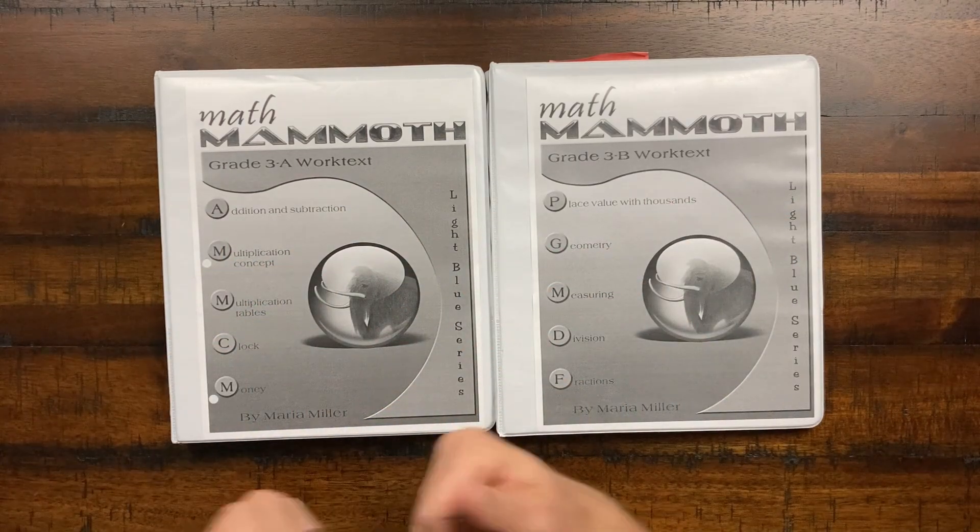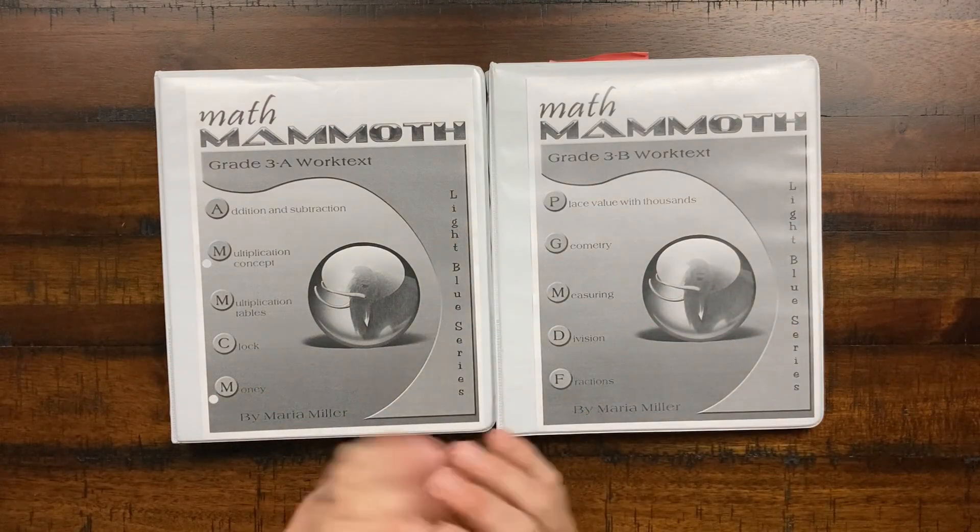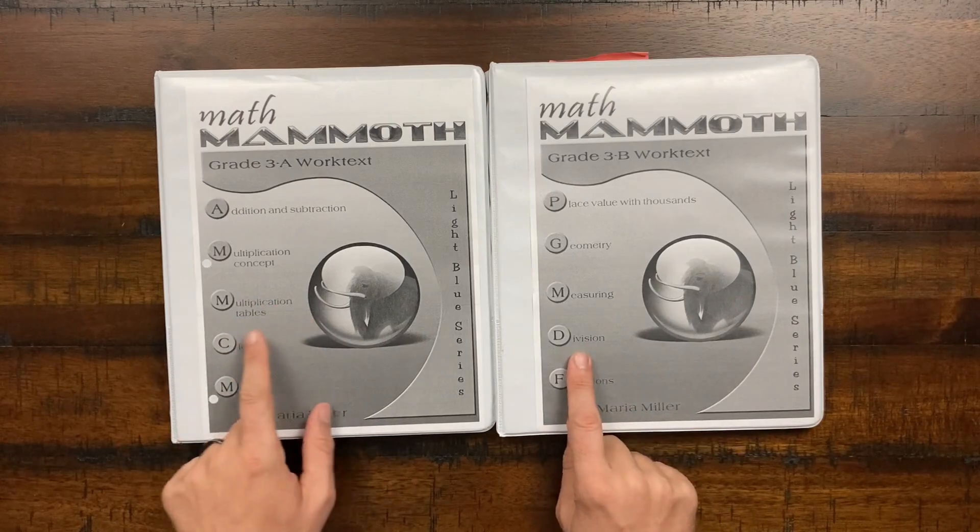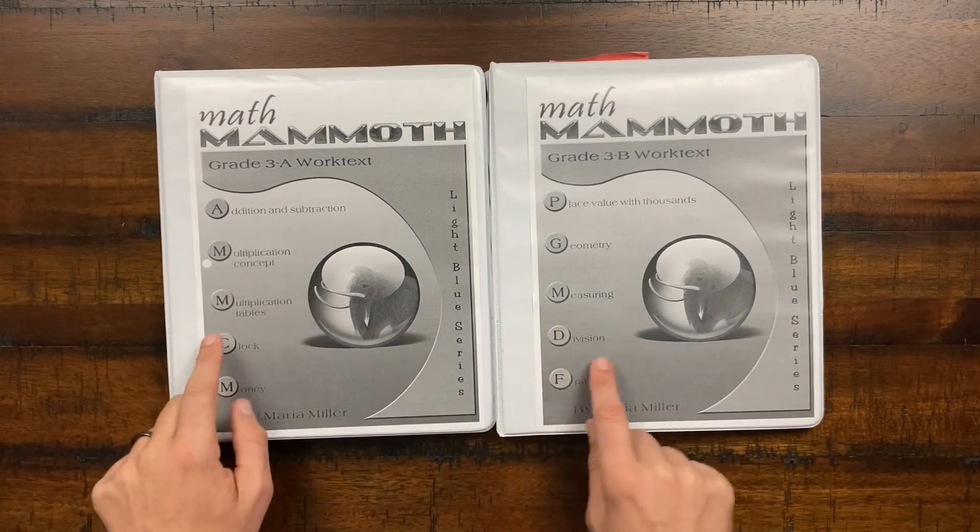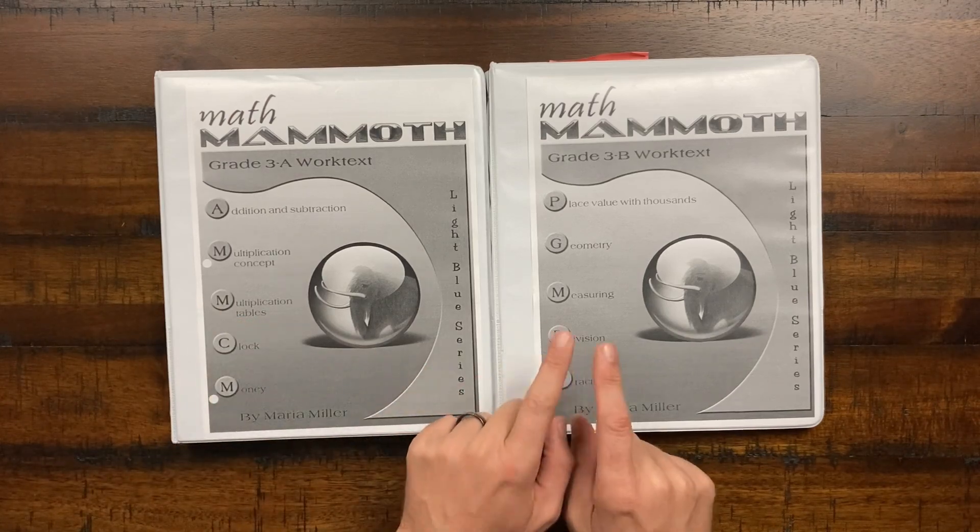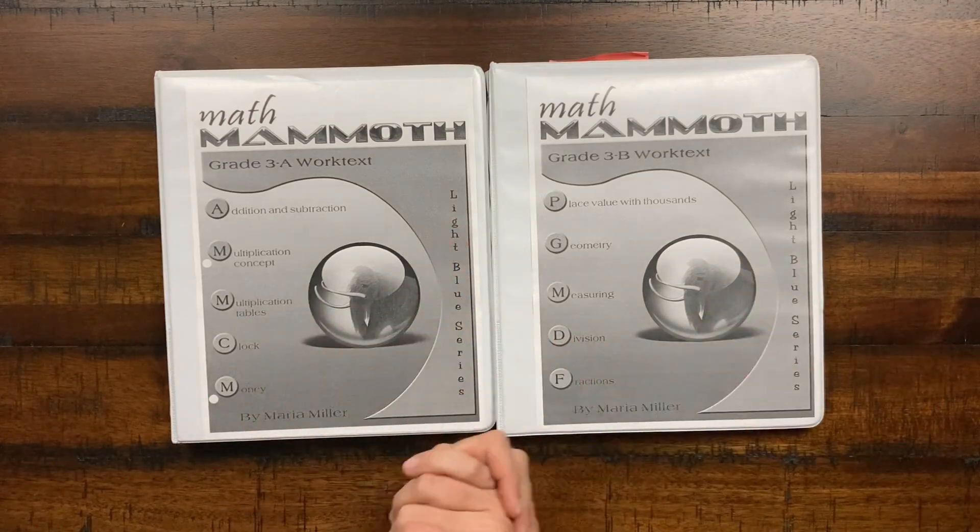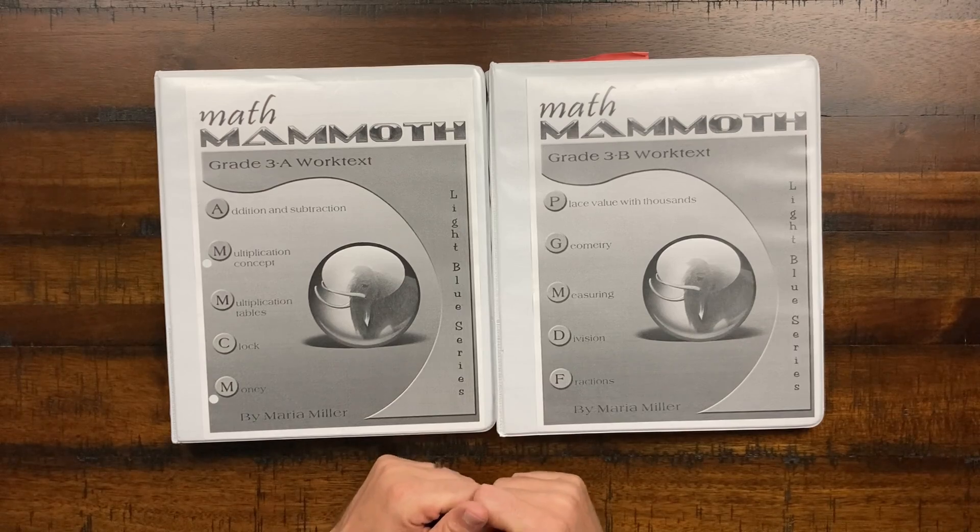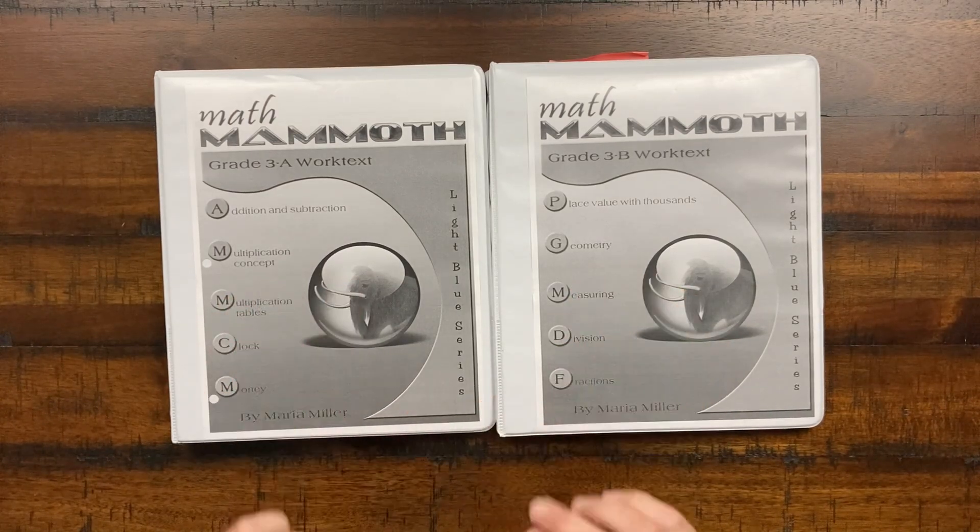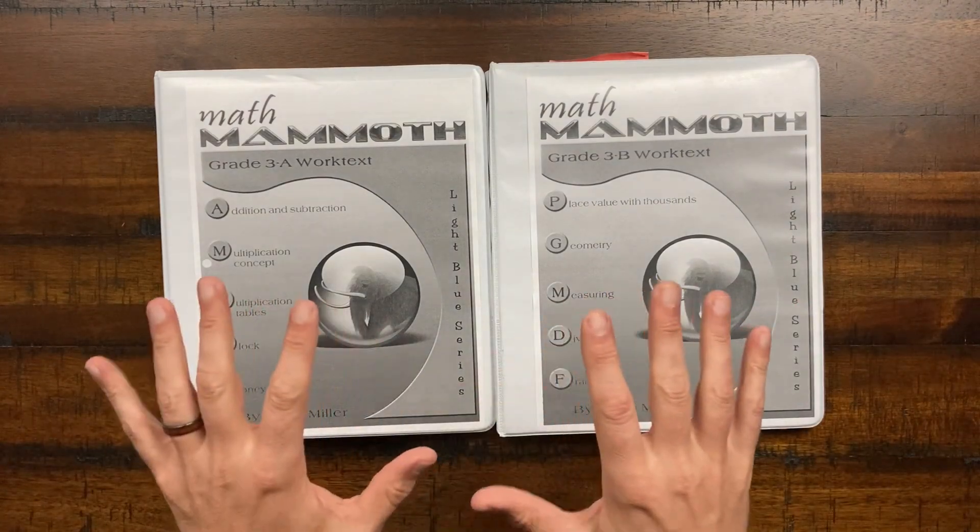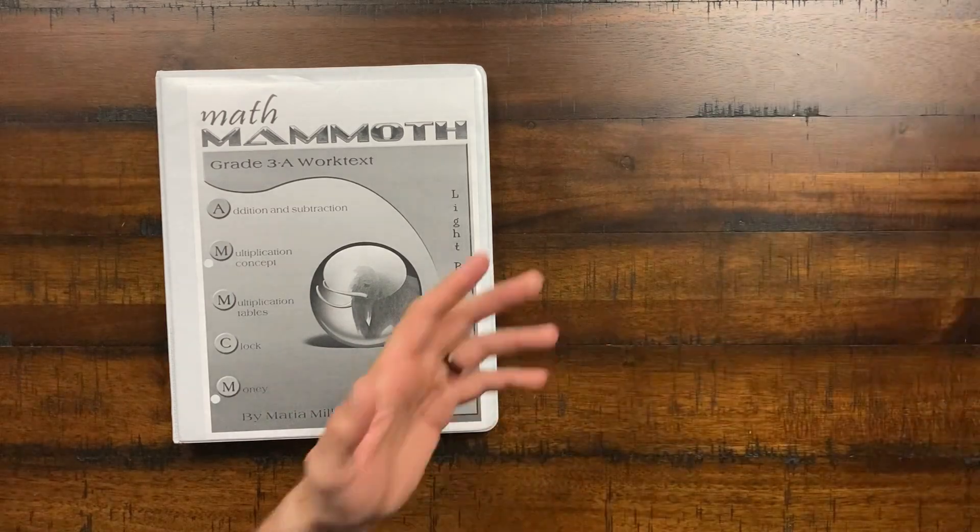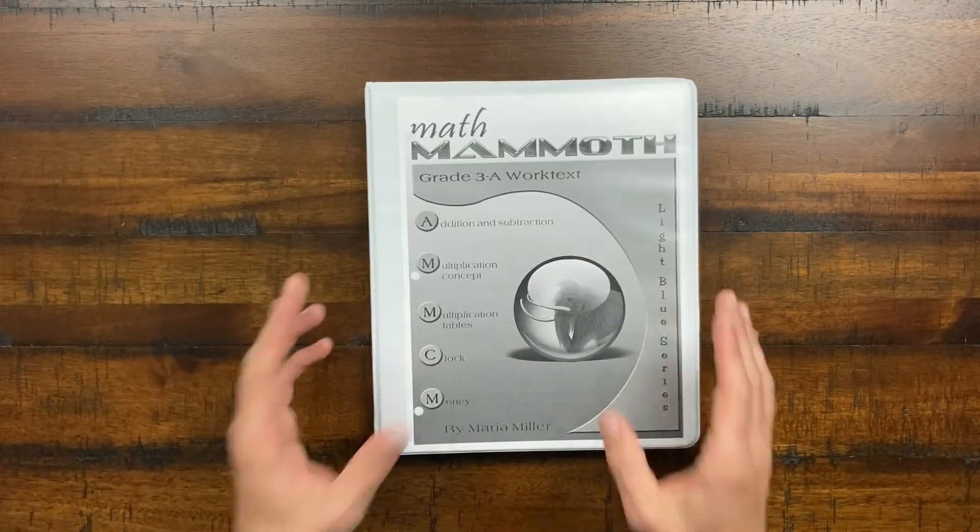So here we have a nice little list of what is covered in this curriculum. We have addition and subtraction. We expand on that. Multiplication concepts, multiplication tables, clock money, place value up to the thousands, do a little bit of geometry, a little bit of measurement, but really where it lies is the synergy between learning your multiplication tables, being comfortable with multiplication, and then having that manifest in division. And we touch on fractions at the end. So a lot is covered in this math mammoth level, which has been building over the levels to this point.